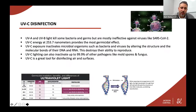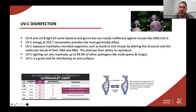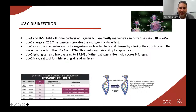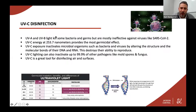UVC as it relates to disinfection: UVA and UVB light will kill some bacteria and germs but are mostly ineffective against viruses like COVID-19. UVC energy at 253.7 nanometers provides the most precise and most germicidal effect. UVC exposure inactivates microbial organisms such as bacteria and viruses by altering the structure and molecular bonds of their DNA and RNA, destroying their ability to reproduce. UVC light can also inactivate up to 99.9% of other pathogens like mold spores and fungus, and is a great tool for disinfecting air and surfaces.